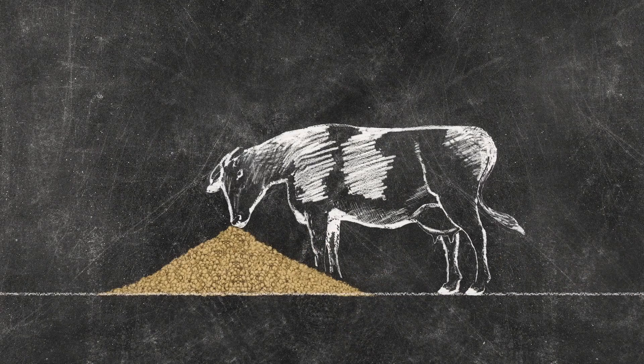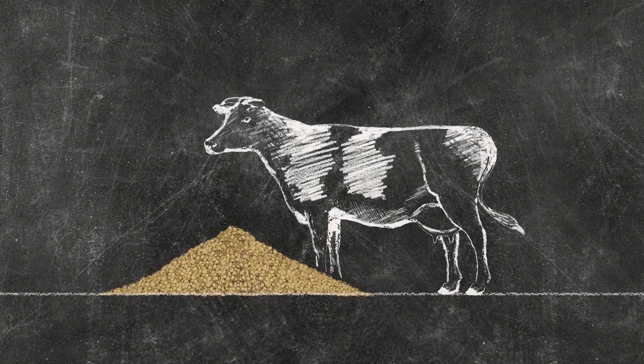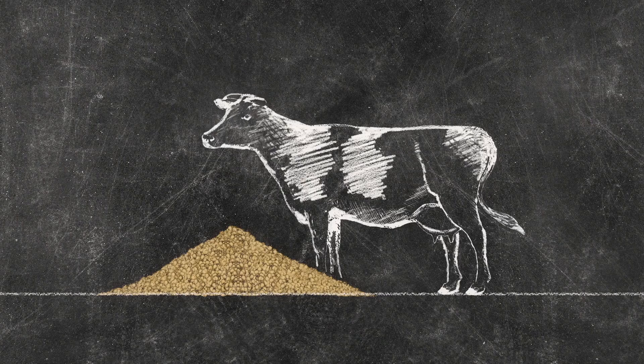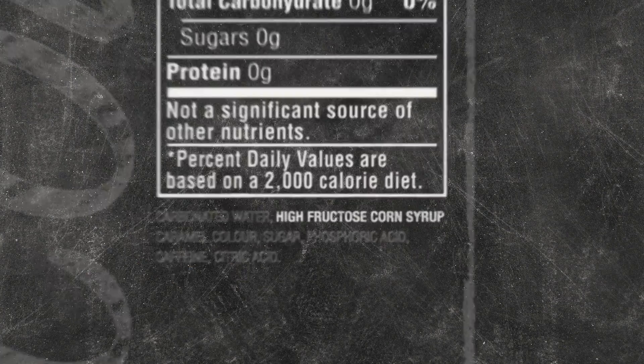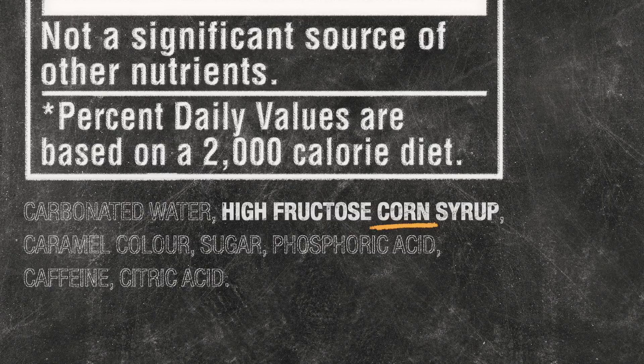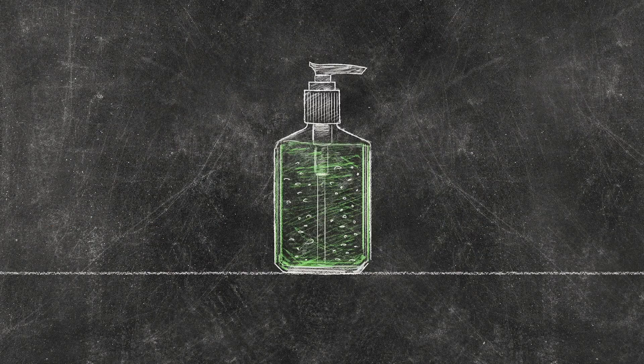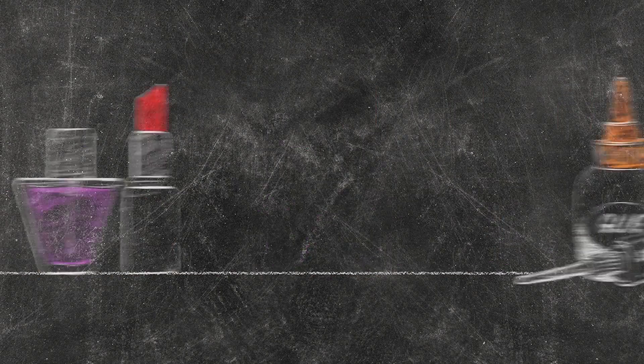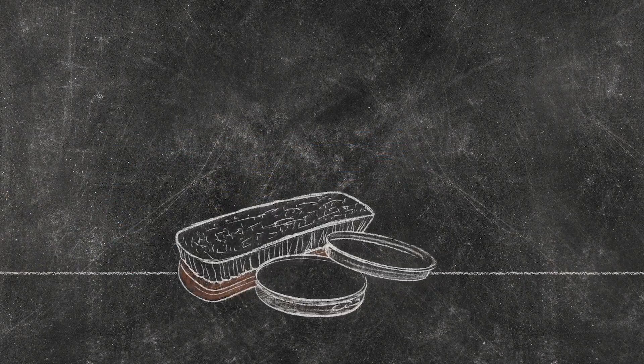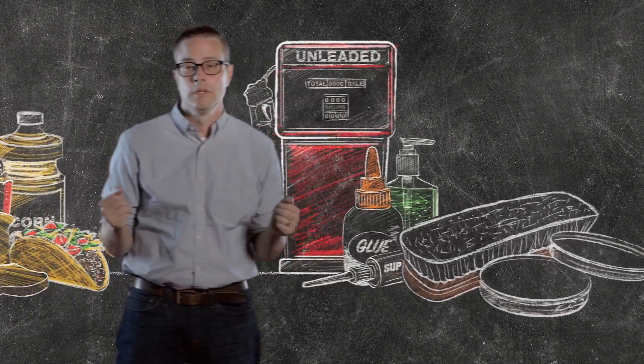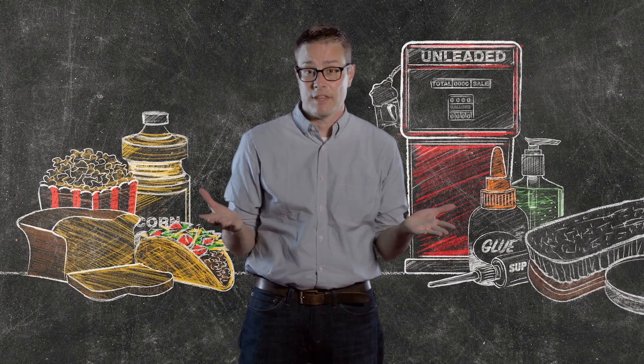One last thing. The corn used for ethanol feeds the livestock we eat and sweetens the beverages we drink. But it also goes into plastics, deodorant, hand sanitizer, carpeting, makeup, glue, paint, shoe polish. Whew. So then is it food versus fuel? Or is it food versus everything?